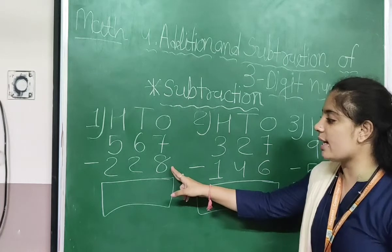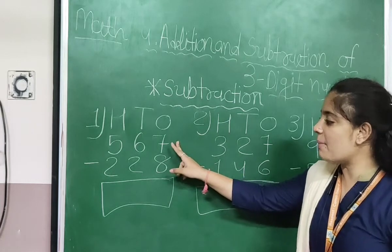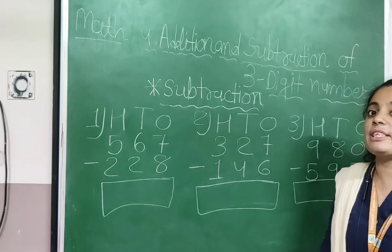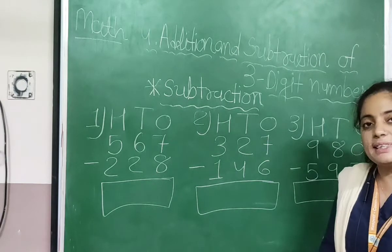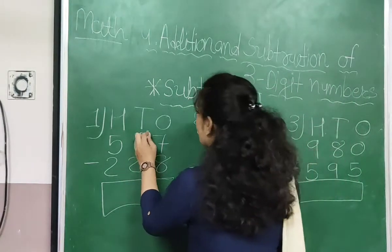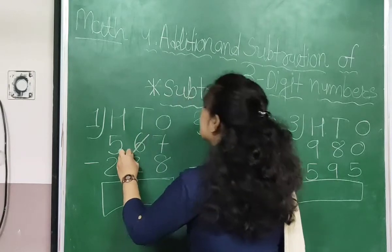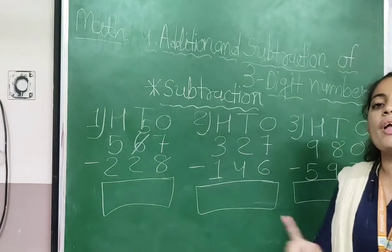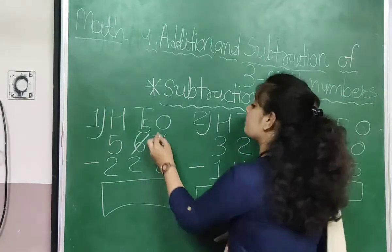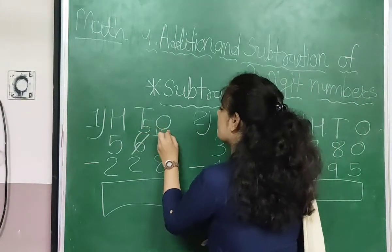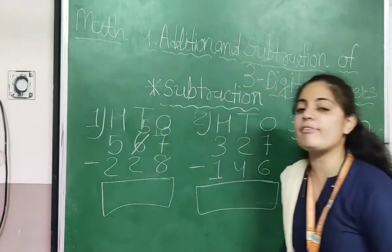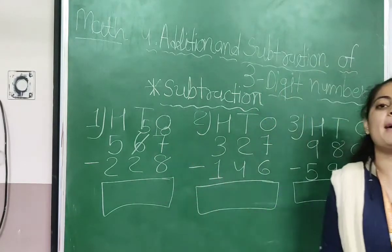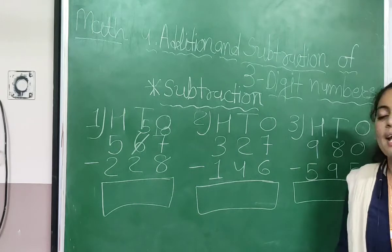567 minus 228. Now 7 minus 8 — smaller number minus bigger number. Is it possible? No, it is not possible. So we are supposed to borrow from the tens digit. Here I am crossing 6 and writing 5, drawing 1 from 6 and adding 10. So 10 plus 7 becomes 17. Now 17 minus 8 — count from 8 until you reach 17.